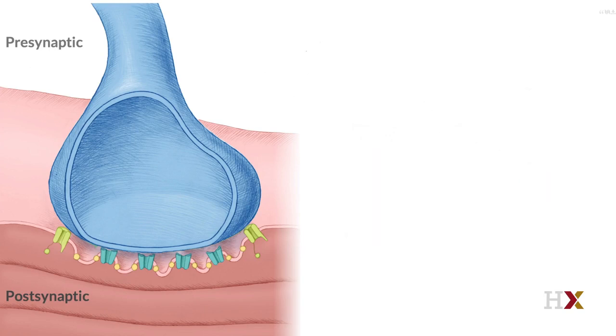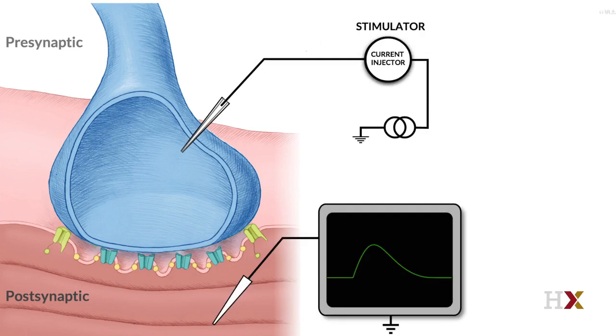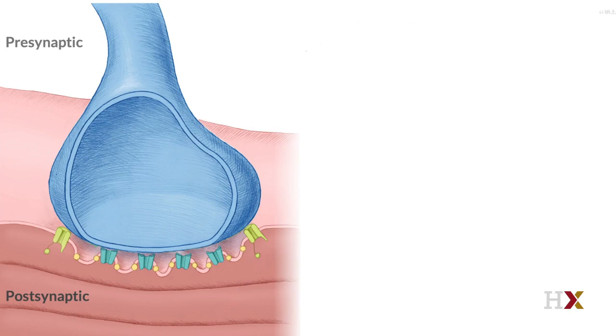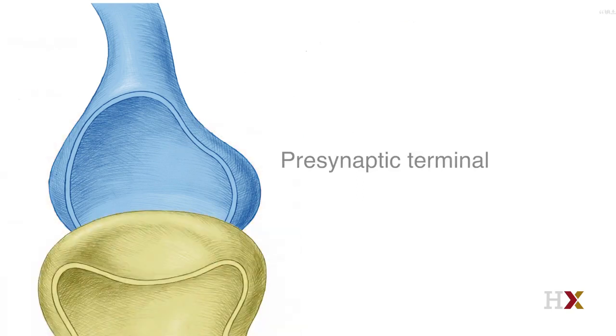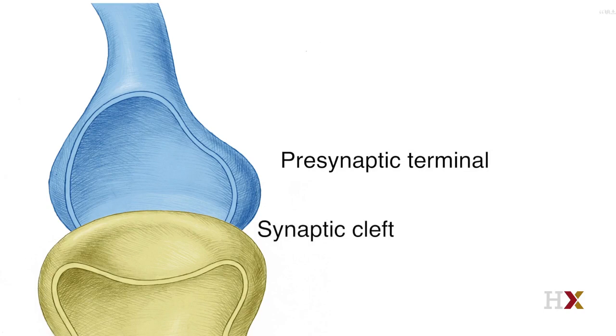The earliest experiments simply attempted to measure the timing of the signals in the presynaptic and postsynaptic terminals using electrodes and amplifiers. Here we have a synapse with a presynaptic terminal, synaptic cleft, and postsynaptic terminal.